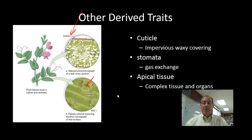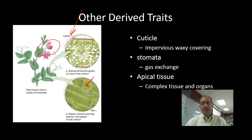Also seen in many land plants is apical tissue, which allows for complex features. In this illustration, we can see how from a node, branches, leaves, and flowers develop from the apical tissue.